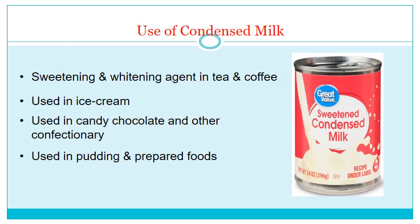The uses of condensed milk include: mainly as a sweetening and whitening agent in tea and coffee; used in ice cream as a source of fat and other milk solids; used in candy, chocolate, and other confectionery; and used in puddings and prepared foods. It is a very handy material to be stored and used anytime for many different kinds of preparations.